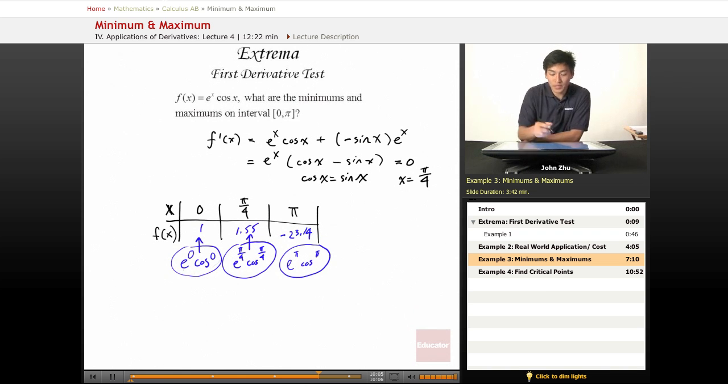So now we have these points, and we know that there's no change in directions or surprises in between them. So these are the either max or mins within the interval. So the max value is here at pi over 4, which is 1.55, and the minimum value is here at pi, which is negative 23.14. So here is the max, and here is the min.